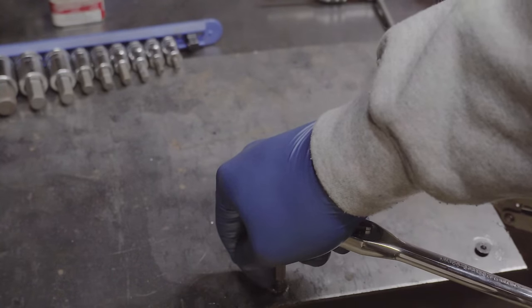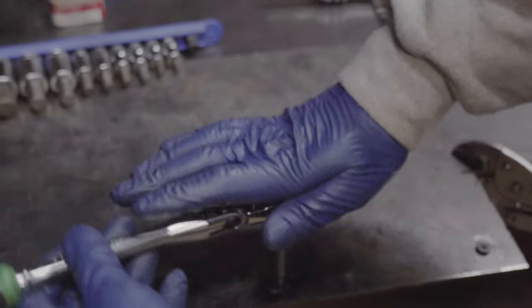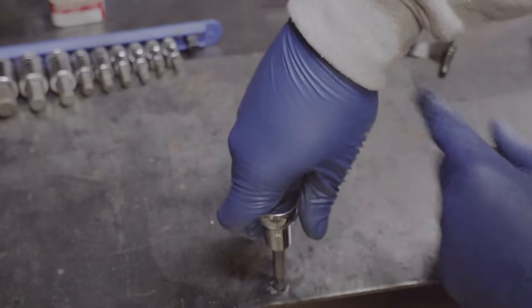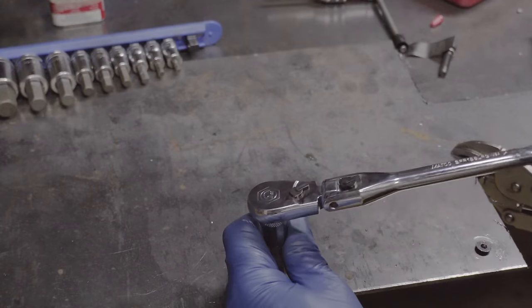You push it down in, and it'll grip and remove the stripped allen head.